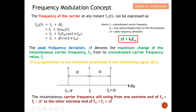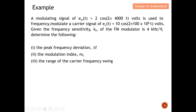The peak frequency deviation denotes the maximum change of the instantaneous carrier frequency from its unmodulated carrier frequency fc. Looking at this diagram, the maximum peak frequency deviation represents the highest amplitude of the modulating signal on one side, and the lowest amplitude of the modulating signal on the other. You can imagine the frequency arrow shifting to different points to indicate the amplitude of the modulating signal.